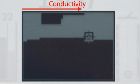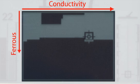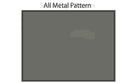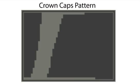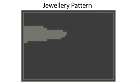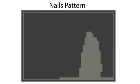Conductivity is plotted on the horizontal axis, and ferrous properties are plotted on the vertical axis. This gives the user more information about the target and allows junk to be discriminated by shading areas of the display, creating a discrimination pattern. The e-Track comes with ten pre-programmed discrimination patterns, which you can combine to produce patterns, or you can create your own.